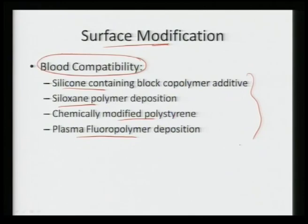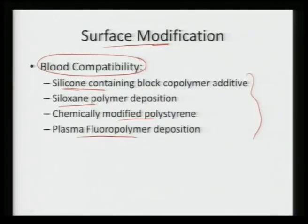These materials are applied as a coating onto the device material to enhance overall interaction without letting blood clot or inducing thrombosis. Otherwise, the device can induce certain toxicity or encourage thrombosis near those regions where the device has been inserted. This induces blood compatibility via materials such as silicon-containing block copolymers, siloxanes, chemically modified polystyrene, or plasma fluoropolymer deposition.